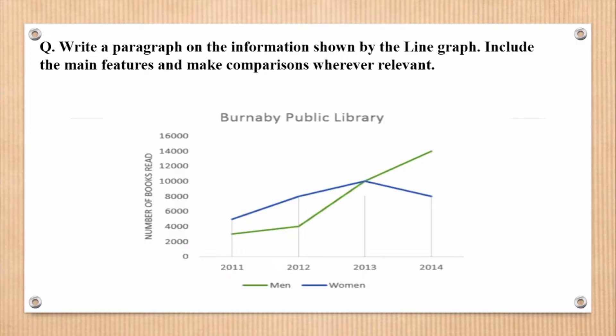This is the line graph on Burnaby Public Library. On the left-hand side you can see the number of books read, and along the bottom you can see men and women. The green line indicates men and the blue line indicates women. It also shows the years 2011, 12, 13, and 14 — so it shows how many books have been read by men and women in those given years.